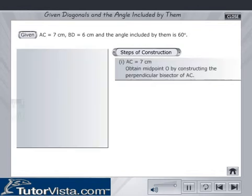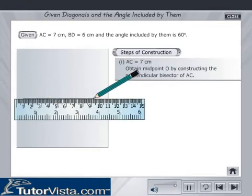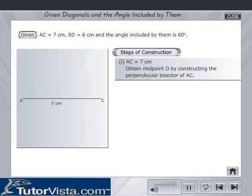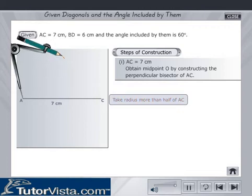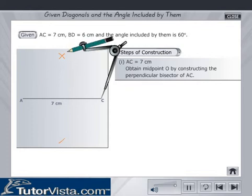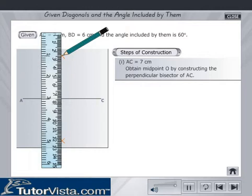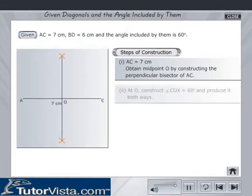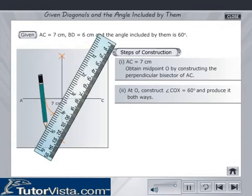Draw AC is equal to 7 cm. Obtain midpoint O by constructing the perpendicular bisector of AC. At O, construct angle COX is equal to 60 degrees and produce it both ways.